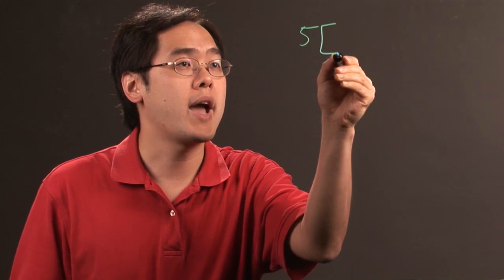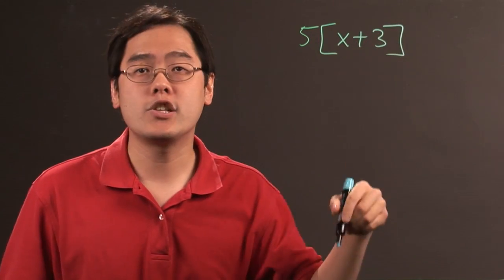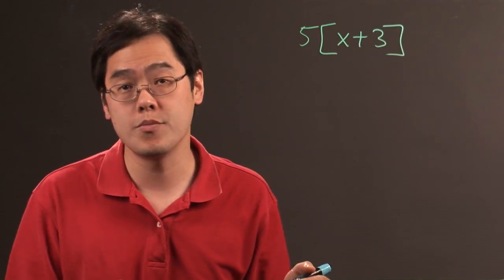So for example, if you have something like 5 bracket x plus 3, you actually treat it like you would if it was 5 times parentheses x plus 3, where you distribute.